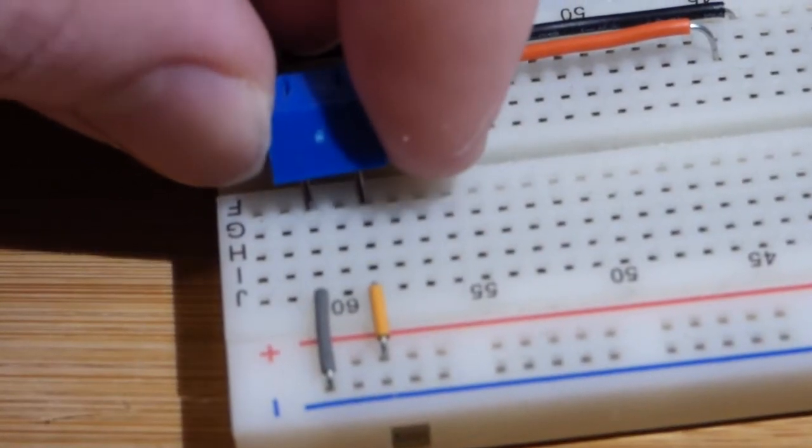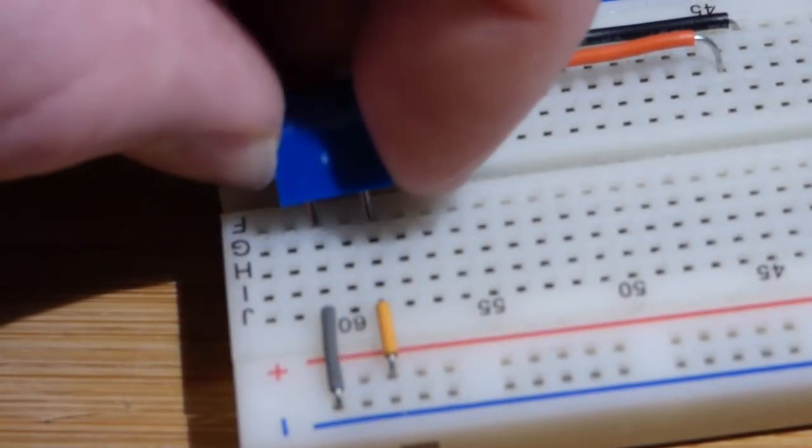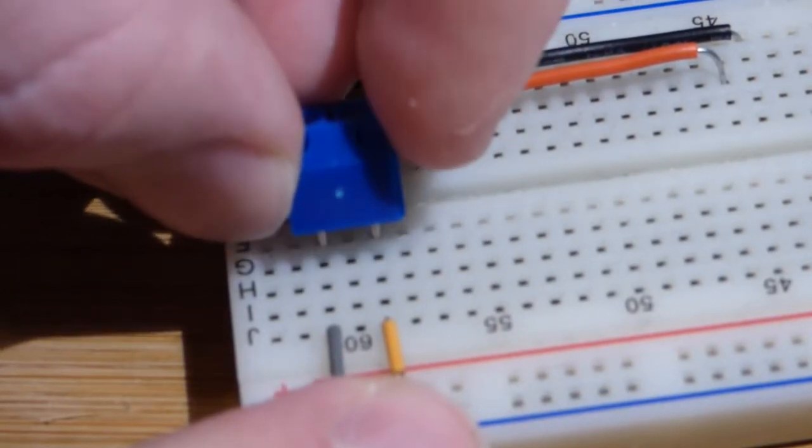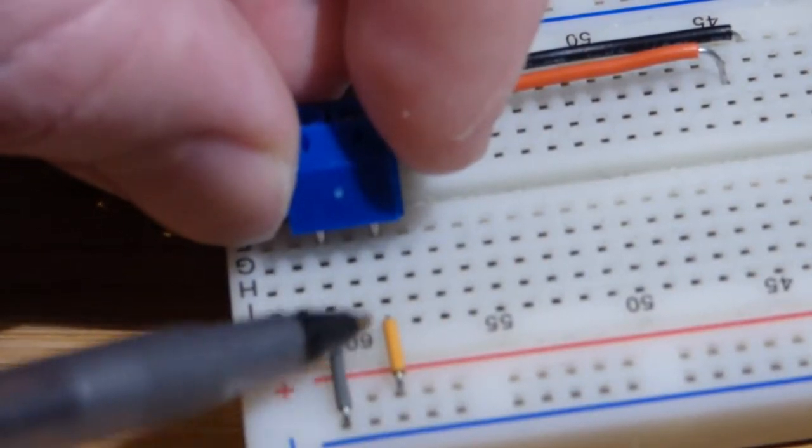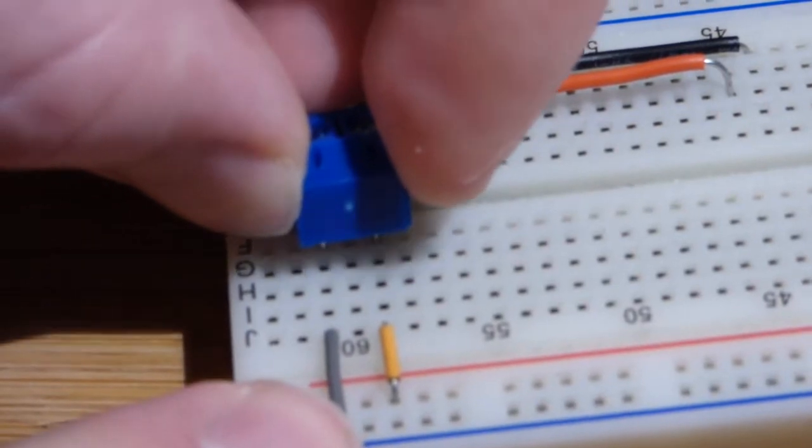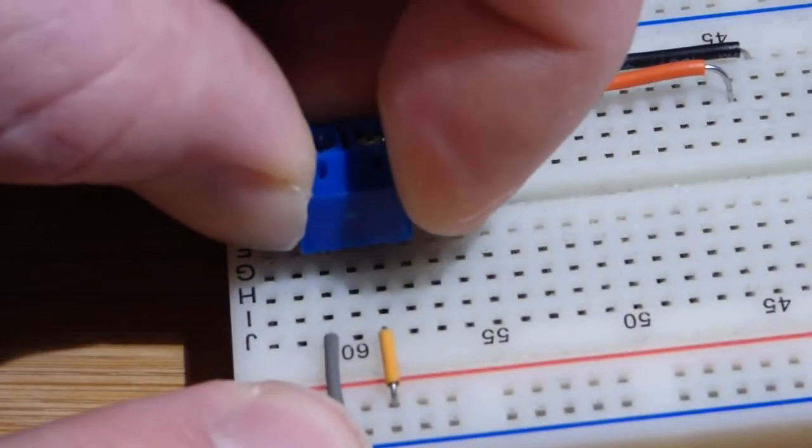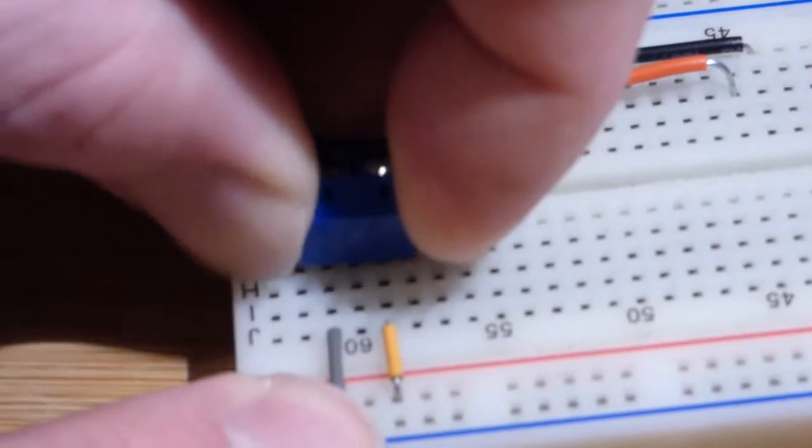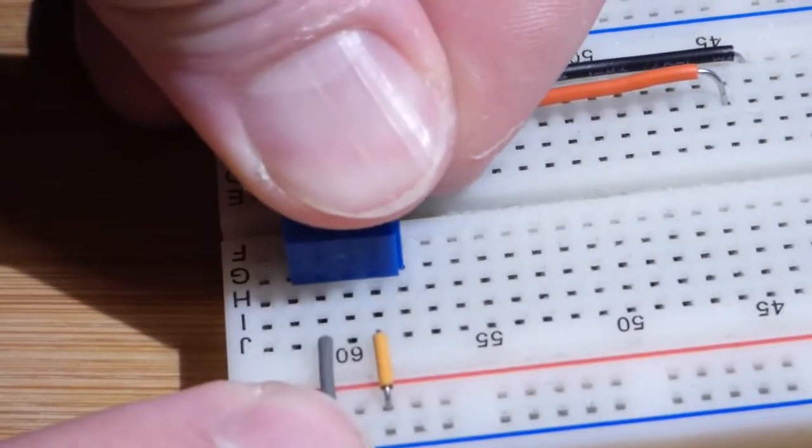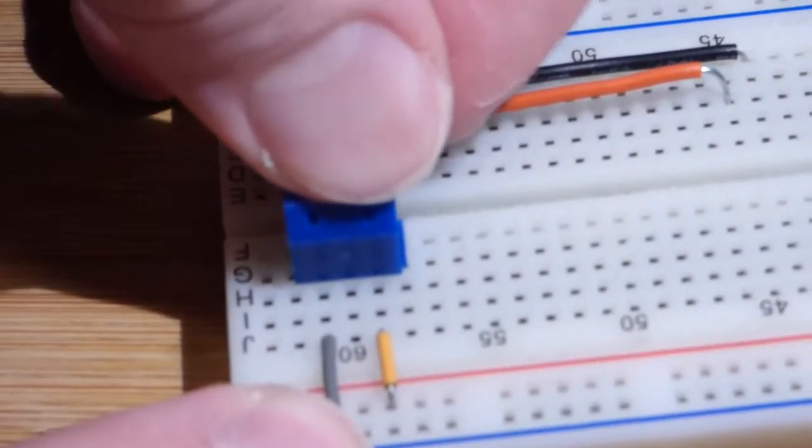We're going to set it over here. This side is just blank and they don't go right into the breadboard near as easy as these. If you just hold pressure on them for a while, kind of wiggle them a little bit, finally it will go in.